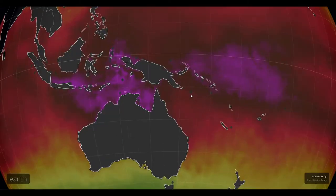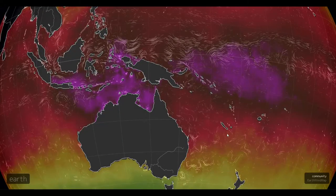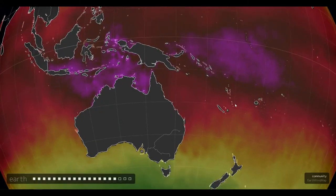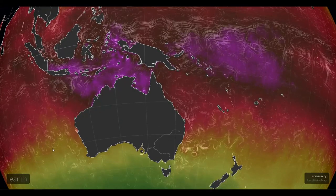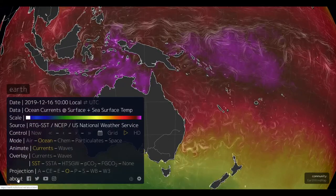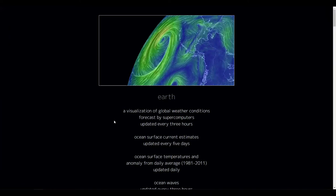The menu can be confusing; however, you can hover over different parts of the menu to uncover more information, such as an acronym or the values associated with different colors on the scale.